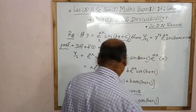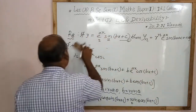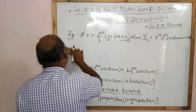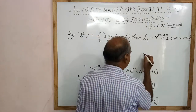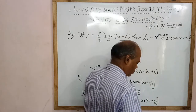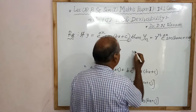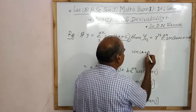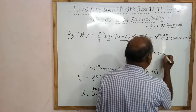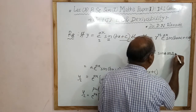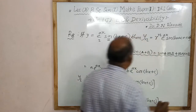Now we can take r common from this, and we use the formula. Sine of a plus b is given by sine of a plus b equals sine a cos b plus cos a sine b. This formula is applied here.